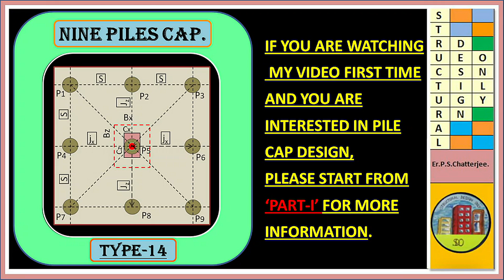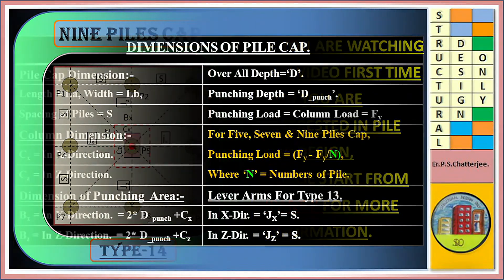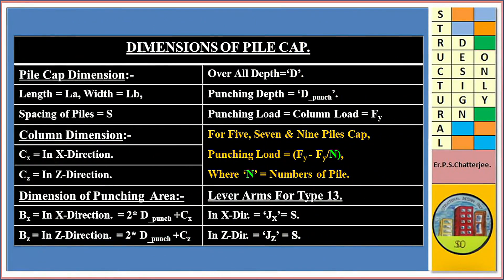If you are watching my video for the first time and are interested in pile cap design, please start from part one for more information. As usual, pile cap dimensions: length equals La, width equals Lb, spacing of pile equals S, column dimensions Cx in X direction and Cz in Z direction. Dimension of punching area: Bx in X direction equals 2 times D-punch plus Cx; Bz in Z direction equals 2 times D-punch plus Cz.